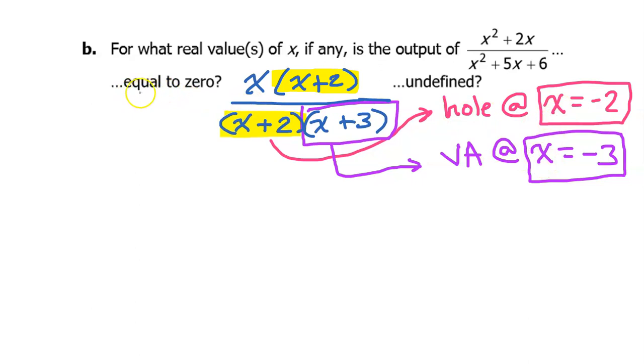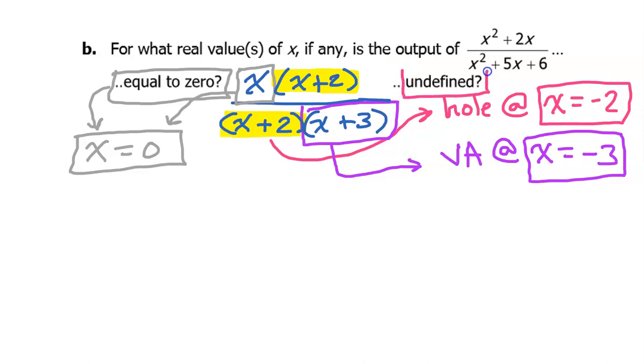If we want to know where the function is equal to 0, we need to turn our attention to the numerator. Ignoring the part that would cancel out as part of the hole, the only part that's left in the numerator is x. So if we set this equal to 0, then we simply have x equals 0. So this function is equal to 0 at x equals 0, and this function is undefined at x equals negative 2 and x equals negative 3.